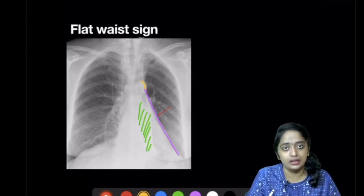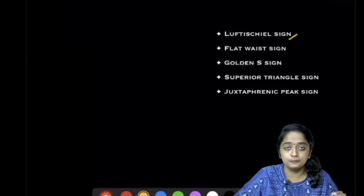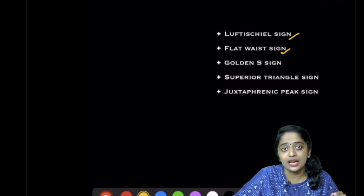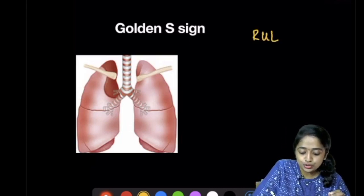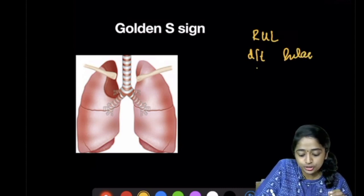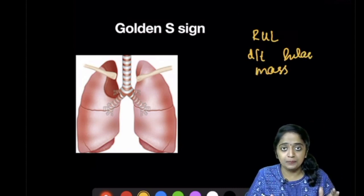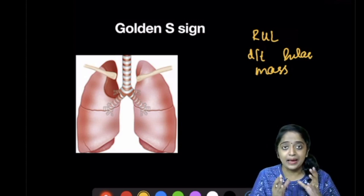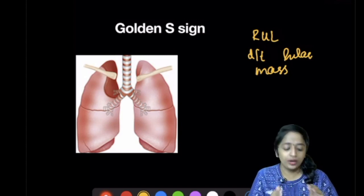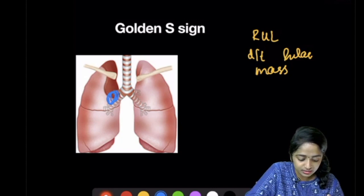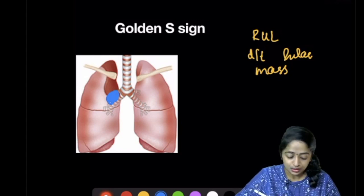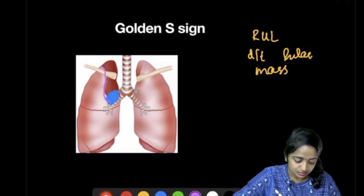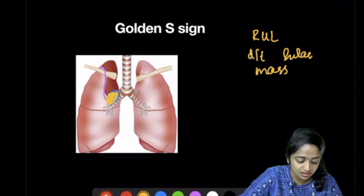Moving to the third sign — the Golden S sign. This is a classic sign seen in right upper lobe collapse due to a hilar mass. The most important cause is a malignancy occupying the central part of the lung near the hilum. The mass surrounds and occludes the bronchus, causing collapse. Together they form an S shape: the lower component is the mass forming the bulge of the S, and the collapsed lung forms the convexity of the S — hence called the Golden S sign.